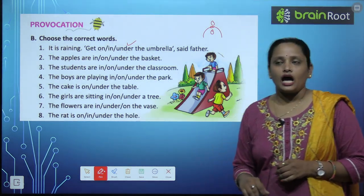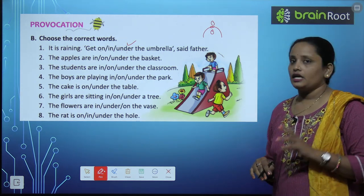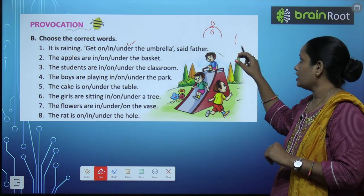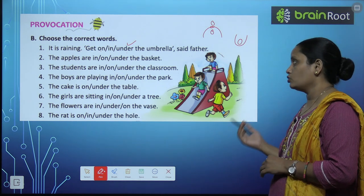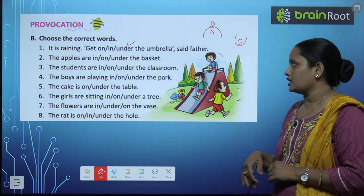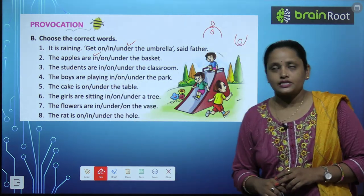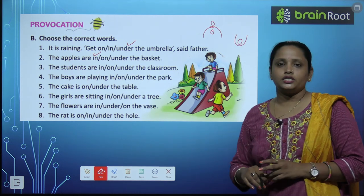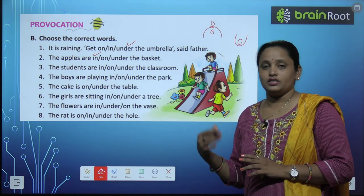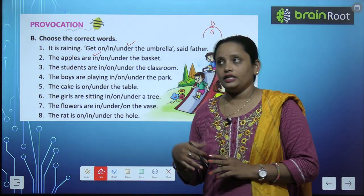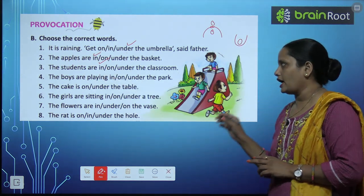The apples are in, on, or under the basket? Apple aur basket hain. In means andar, on means upar, under means basket ke neeche. So the apples are in the basket. The students are dash the classroom. Classroom ke in means andar hain, on means upar hain, ya under means neeche hain? So the children are in the classroom.